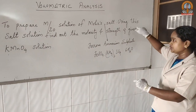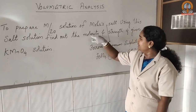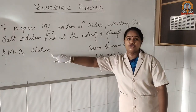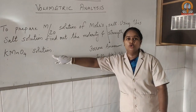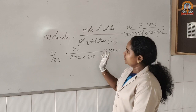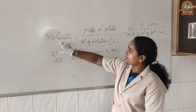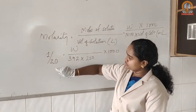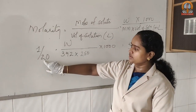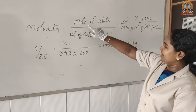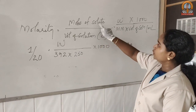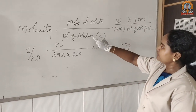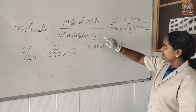Using that solution, you have to identify the molarity and strength of the KMnO₄ solution — that's the unknown solution. You have to apply the formula for molarity. The molarity of Mohr's salt is 1/20. The molarity formula is moles of solute divided by volume of solute, taken in liters.